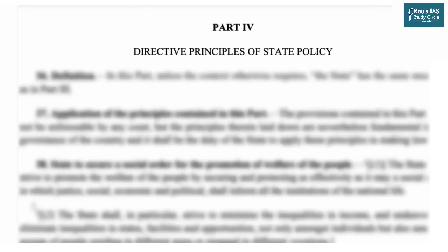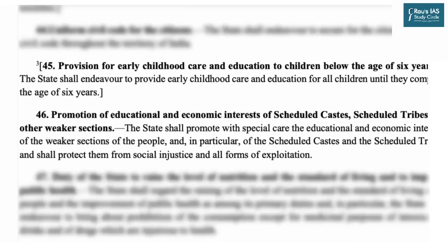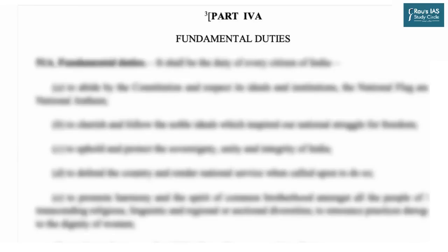Moving on to Part Four — Directive Principles of State Policy — Article 45 focuses on early childhood care and education for all children until they complete the age of six years, whereas Article 46 talks about promotion of educational and economic interests of scheduled castes, scheduled tribes, and other weaker sections. We must not forget fundamental duties in Part 4A, where subsection (h) talks about development of scientific temper, humanism, and spirit of inquiry and reform, which directly deals with education.